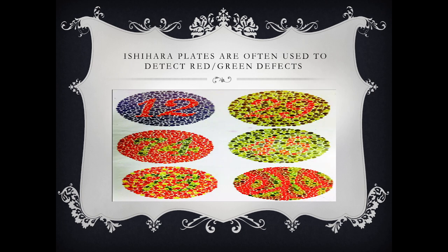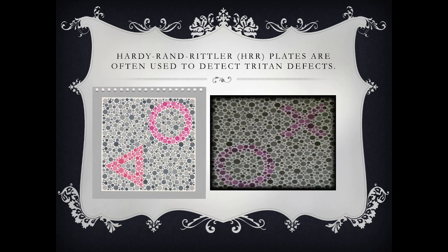Ishihara plates are often used to detect red-green defects. A normal person can see numbers in these plates, but a patient with red-green color blindness cannot detect the numbers. Hardy-Rand-Rittler (HRR) plates are used to detect tritan — blue-yellow — defects; shapes such as squares, circles, and triangles are presented, and a patient with a blue-yellow defect cannot see these shapes.